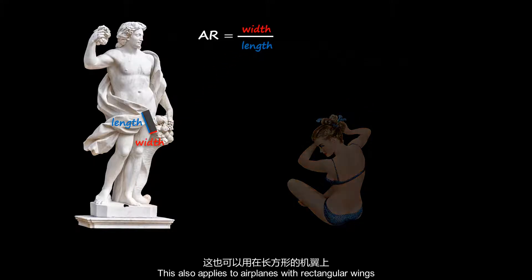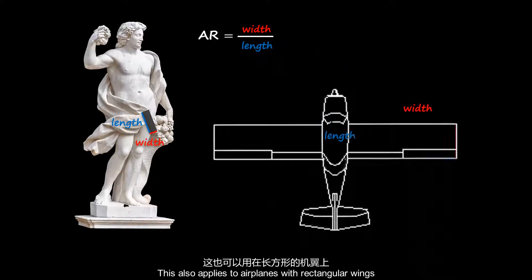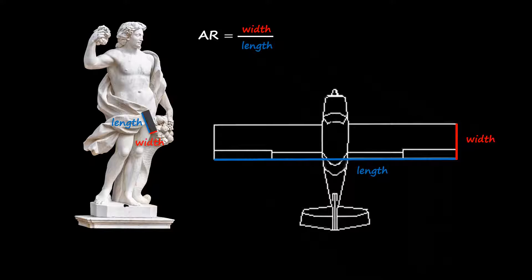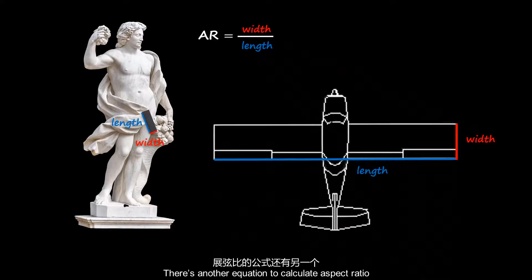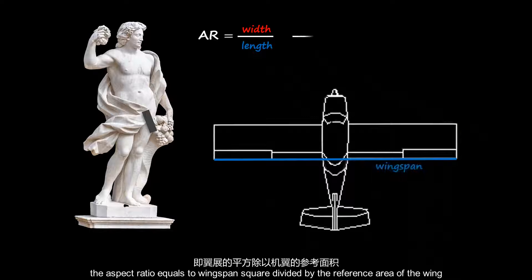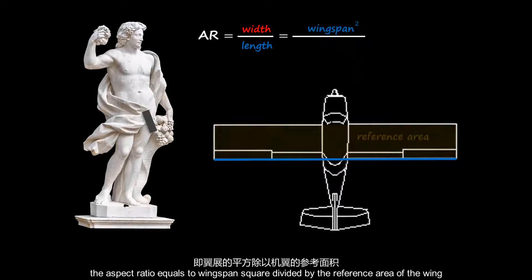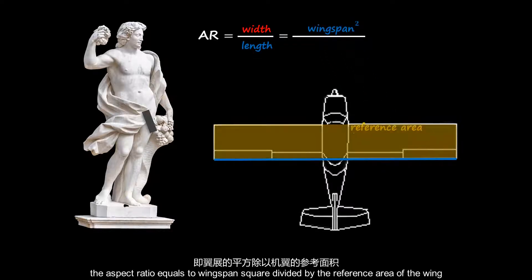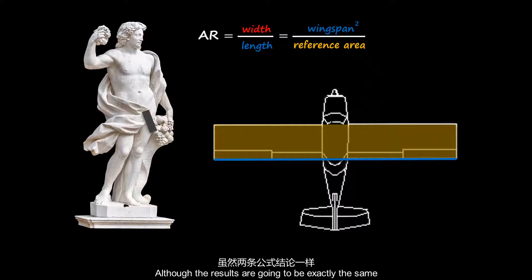This also applies to airplanes with rectangular wings. There is another equation to calculate aspect ratio: the aspect ratio equals the wingspan squared divided by the reference area of the wing. Although the results are going to be exactly the same.